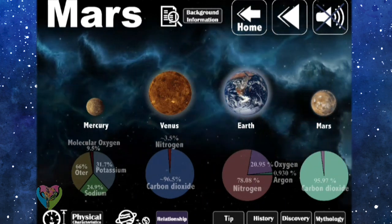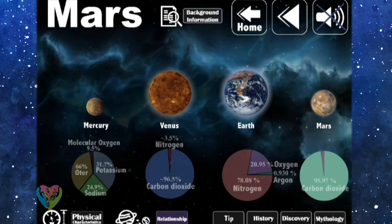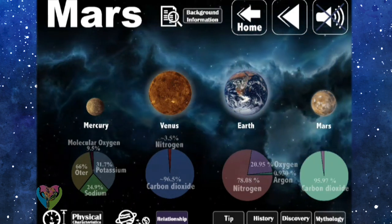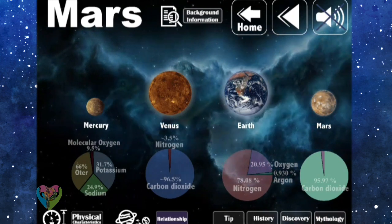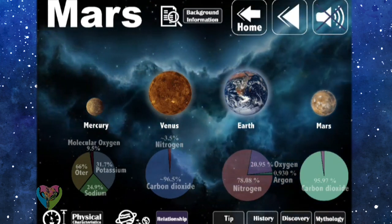Mars: 95.97% carbon dioxide, 1.93% argon, 1.89% nitrogen.